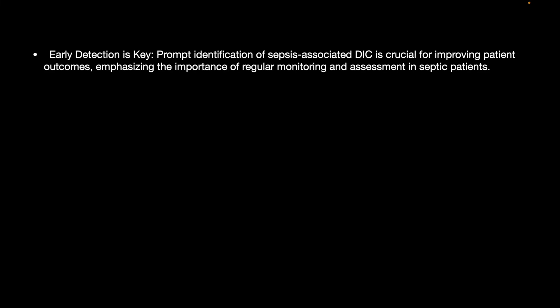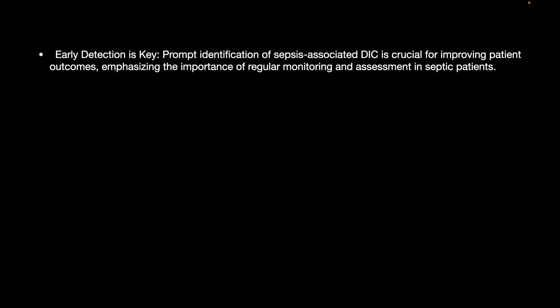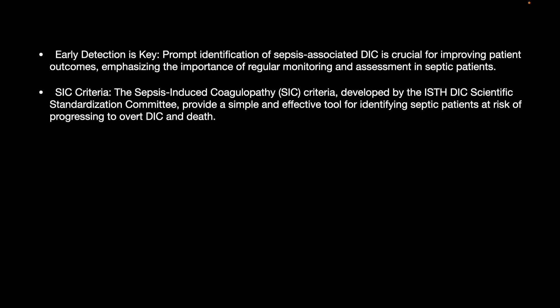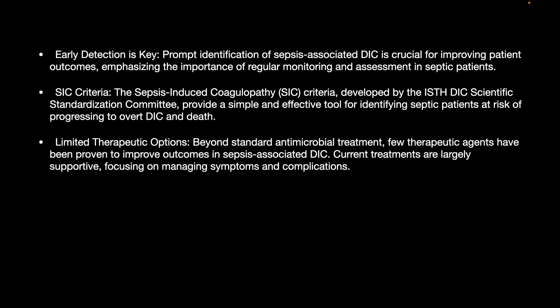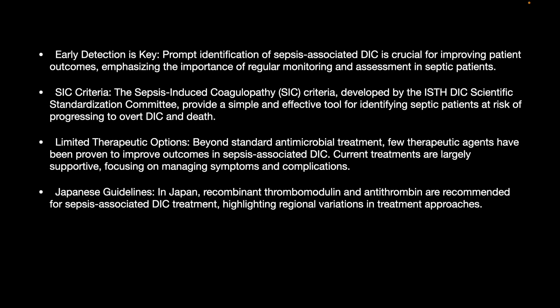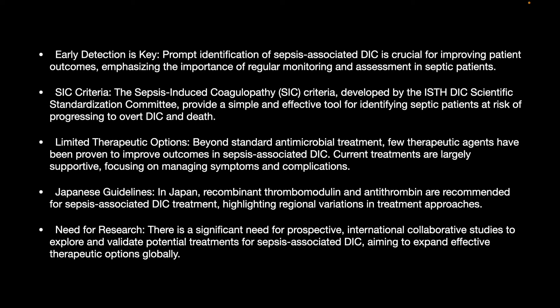The take-home messages are: Early detection is key — prompt identification of sepsis-associated DIC is crucial for improving patient outcomes, emphasizing the importance of regular monitoring in septic patients. The SIC criteria, developed by the ISTH DIC Scientific Standardization Committee, provides a simple and effective tool for identifying patients at risk of overt DIC and death. Beyond standard antimicrobial treatment, few therapeutic agents have been proven; current treatments are largely supportive. In Japan, recombinant thrombomodulin and antithrombin are recommended based on local studies and guidelines. There is a significant need for prospective international collaborative studies to explore potential treatment options and expand effective therapeutic options globally.